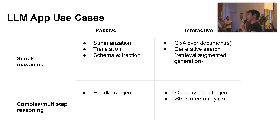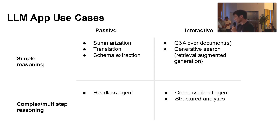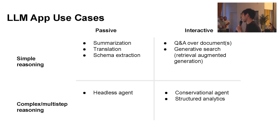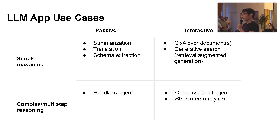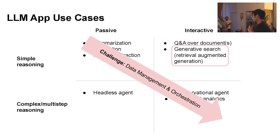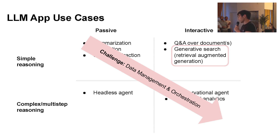Thinking about LLM app use cases over your data, there's a 2D spectrum from passive to interactive, and from simple reasoning to more complex multi-step reasoning. Passive use cases are simple things like summarization and translation. On the other end are conversational agents, multi-step reasoning tasks that users interact with. Our core thesis is that data management and orchestration matters quite a bit as you move toward more complex, interactive use cases.